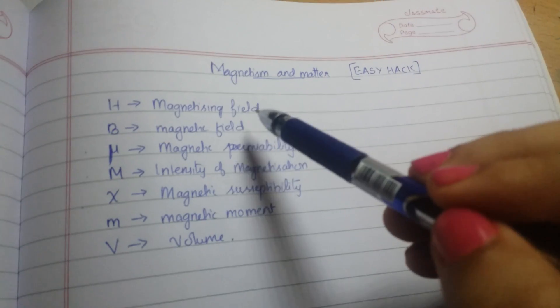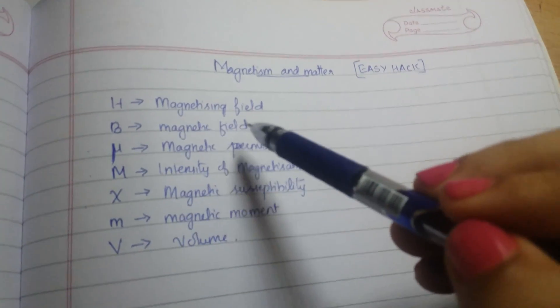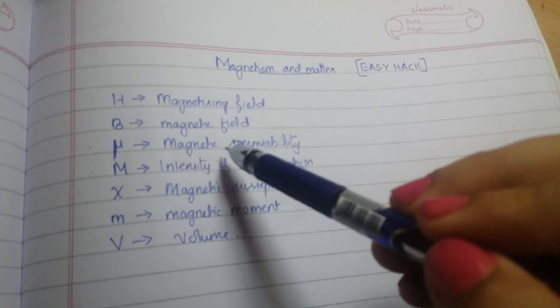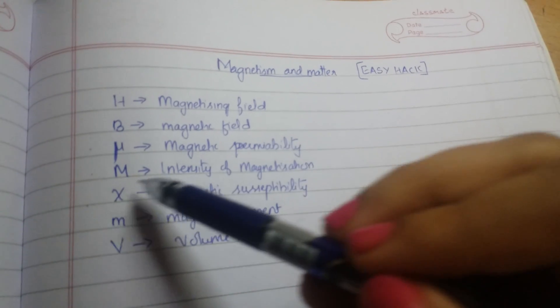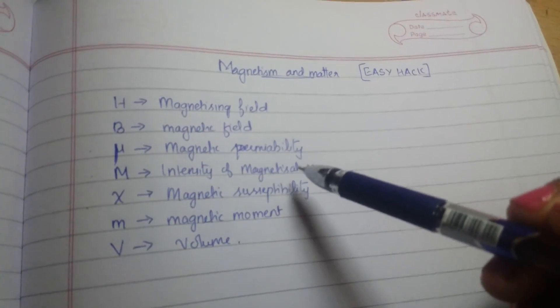So, H is magnetizing field, B is magnetic field, Mu is magnetic permeability, M is intensity of magnetization.